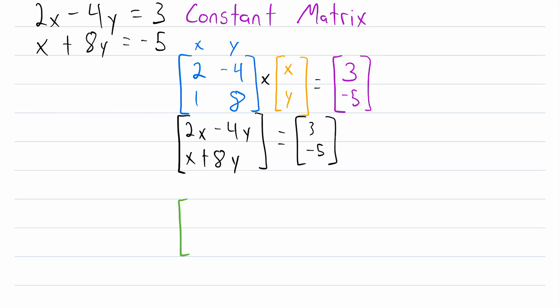What we'll do is join the columns of our coefficient matrix with the column of our constant matrix. That gives us this matrix: the first row has 2, negative 4 from the coefficient matrix, and then 3 from the constant matrix at the end. The second row is 1, 8, negative 5. In an augmented matrix, since these columns come from one matrix and this column comes from another, we often put a line here to separate them.